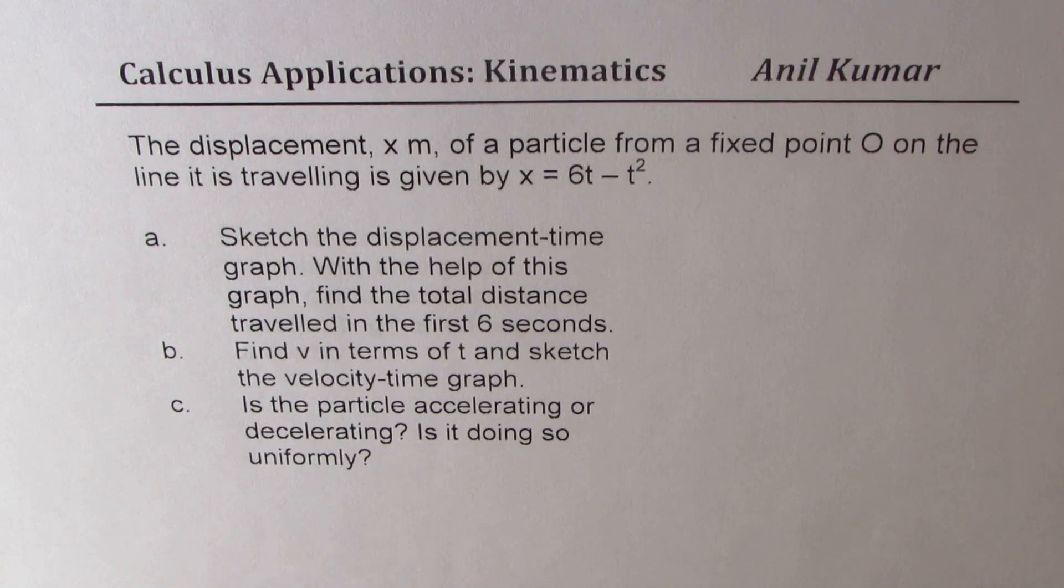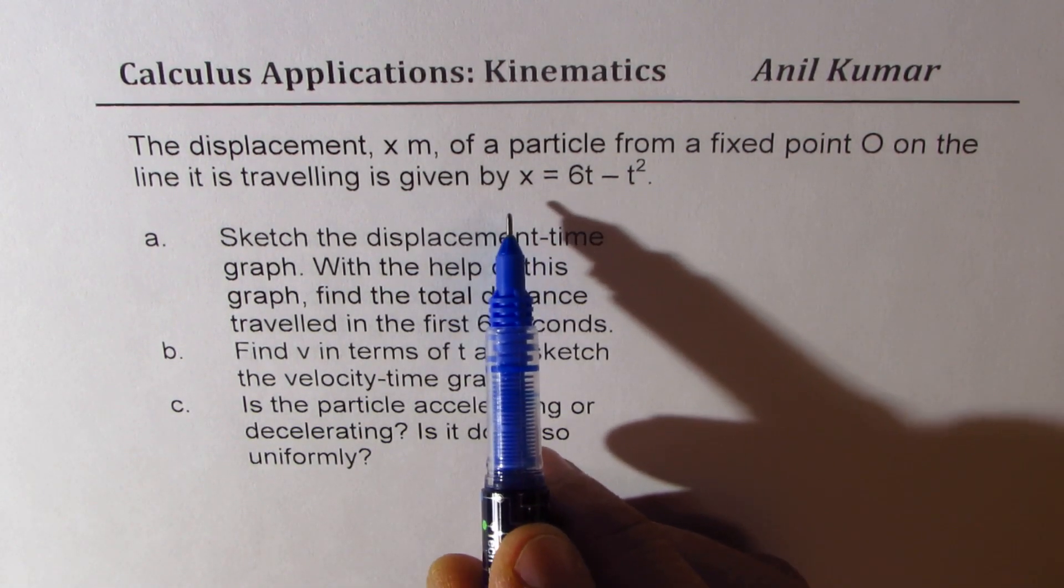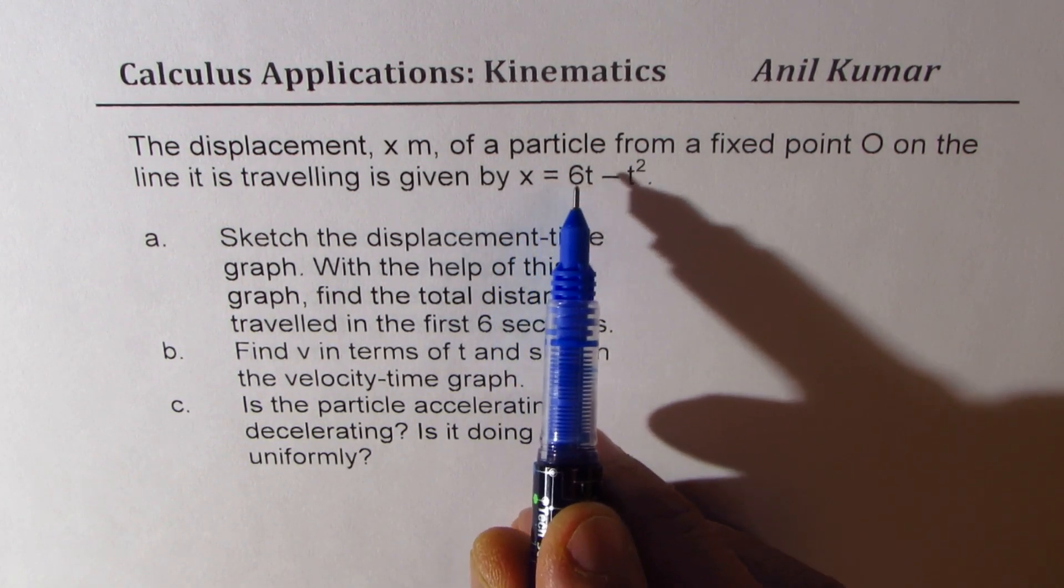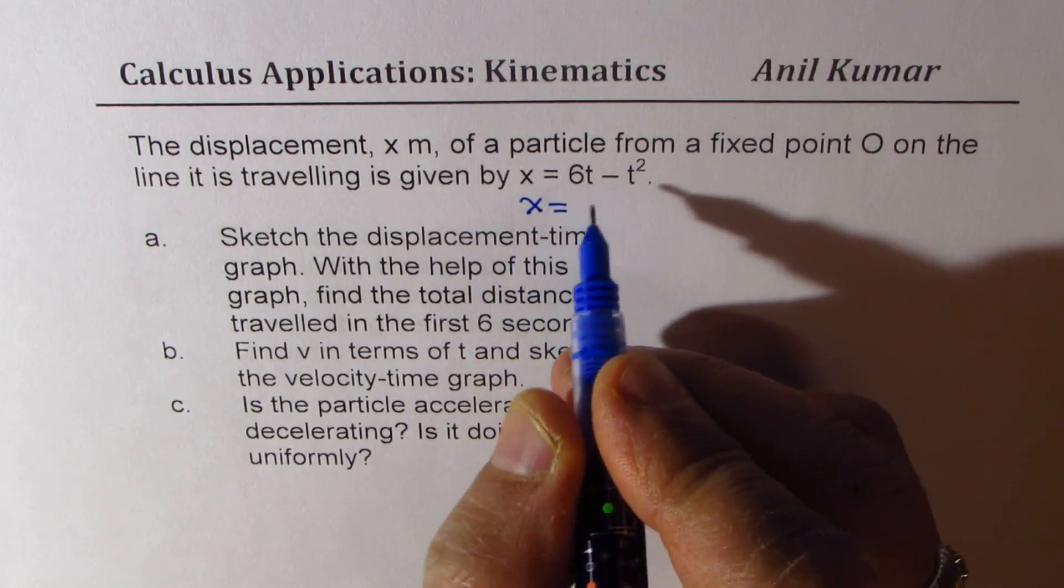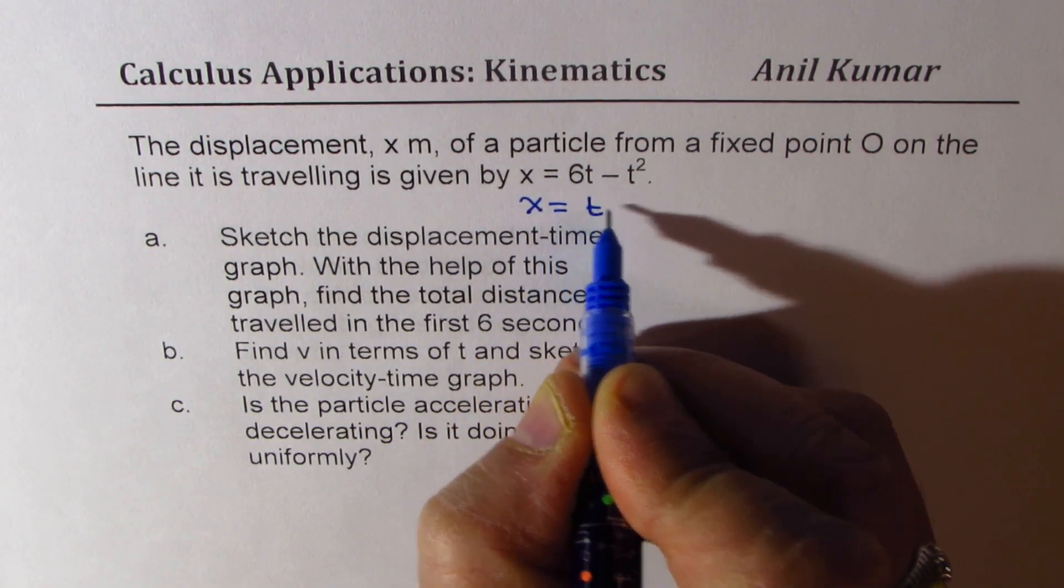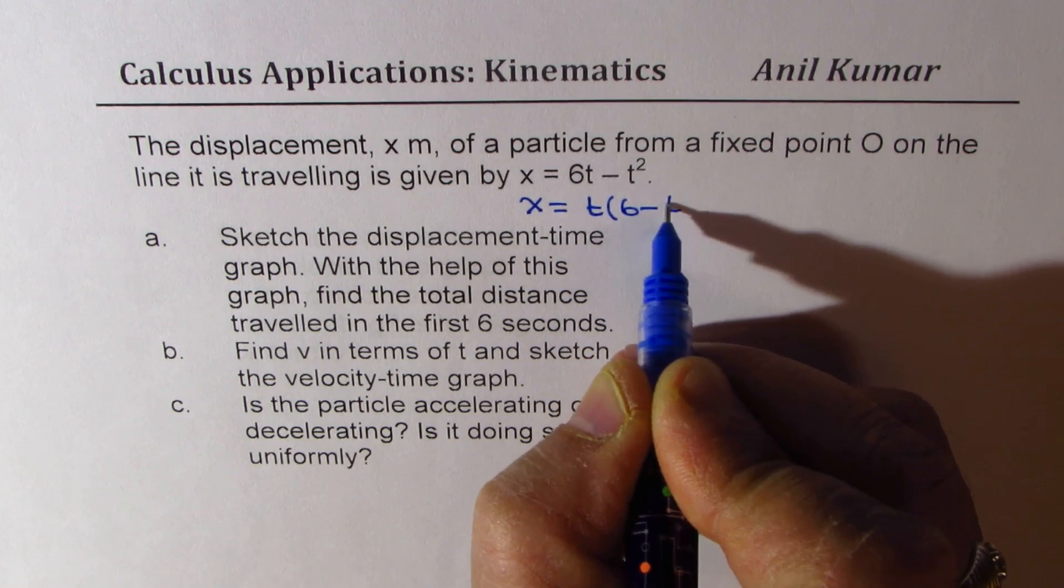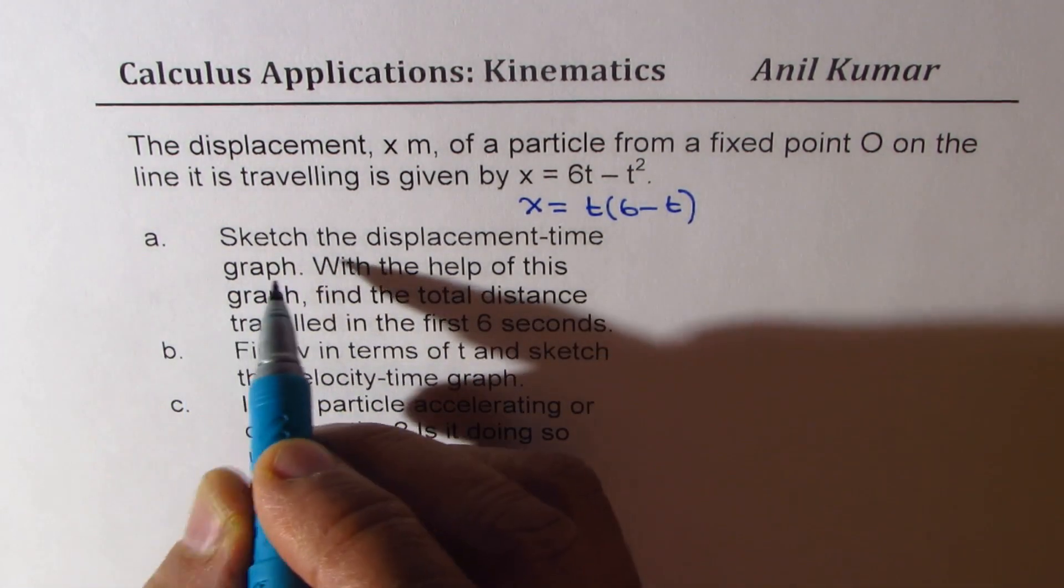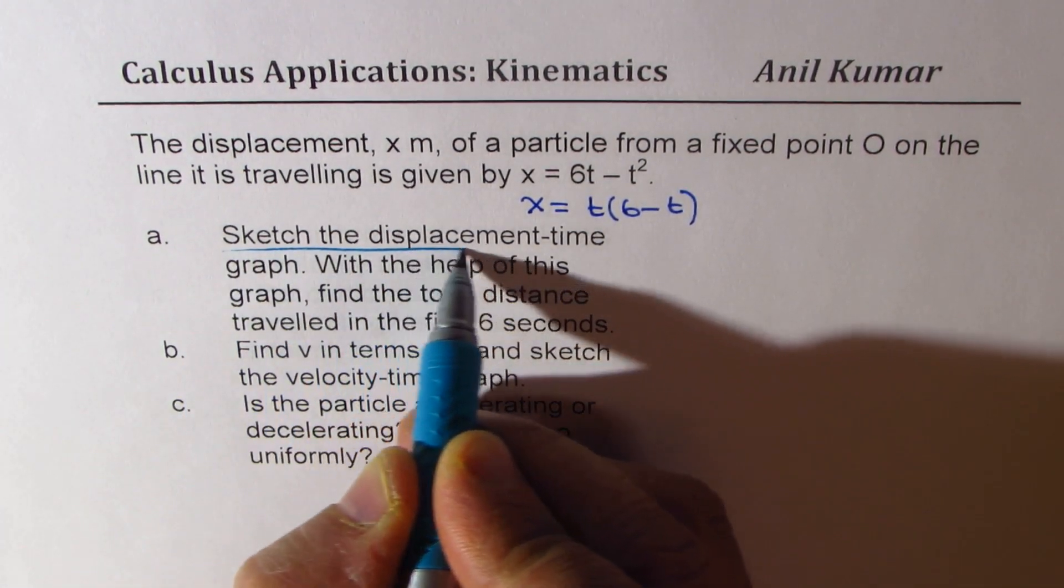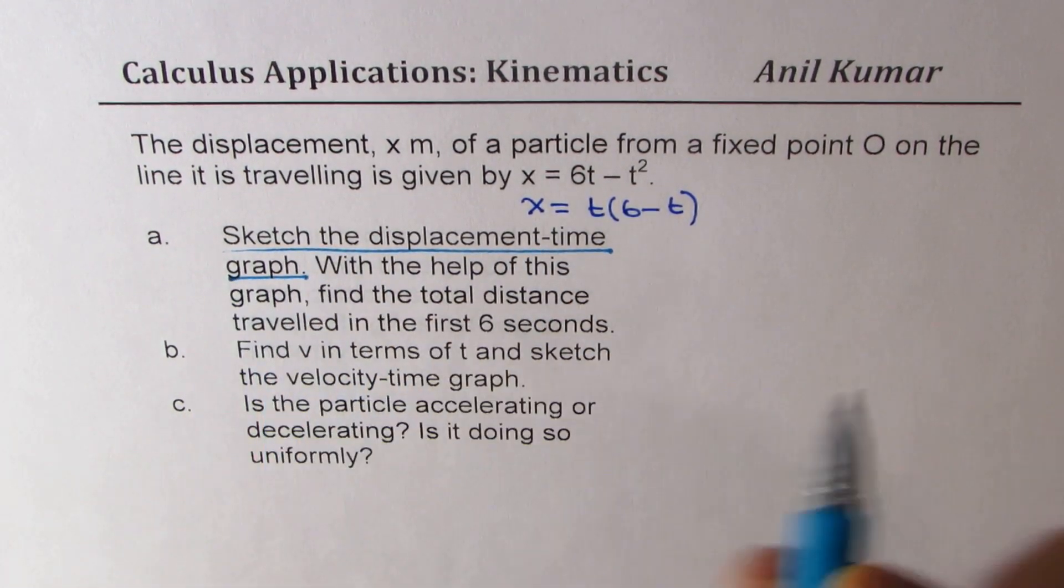Now let's begin with what is given to us, that is displacement x equals 6t minus t squared. I could write x as equal to, we can take t common, so we get t times 6 minus t. Now that is a parabola which can be sketched. So first part is to sketch displacement time graph. So let's do that first.